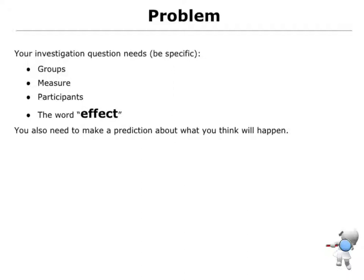In terms of writing an investigation question, we need to have our groups — that's our control group and our treatment group. We need to know what it is that we're measuring: are we measuring the amount of money people spend, their test result, or how much they like something? We also need to know who the participants are — am I doing this experiment on Year 10 students from my school, Year 12 students, or a bunch of adults?